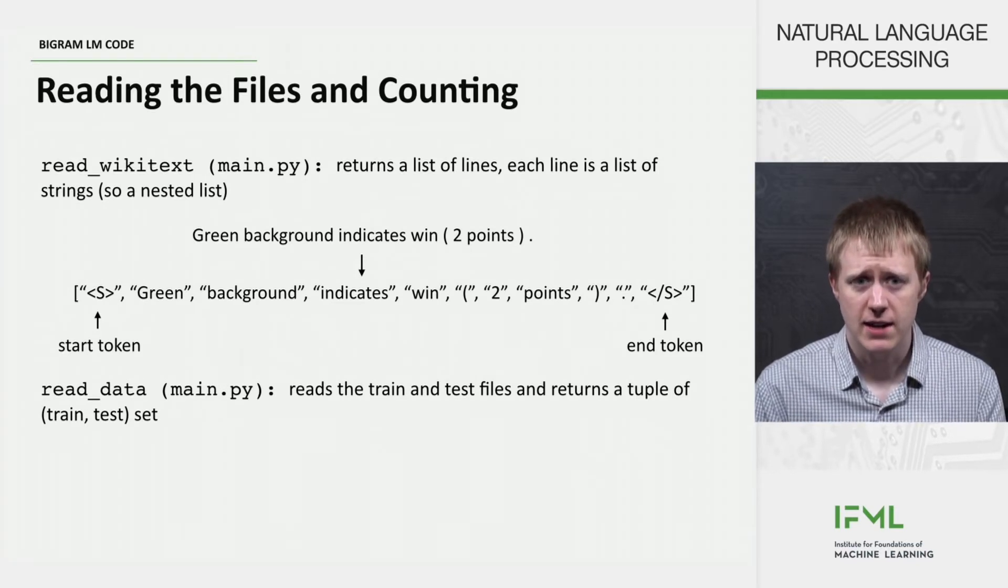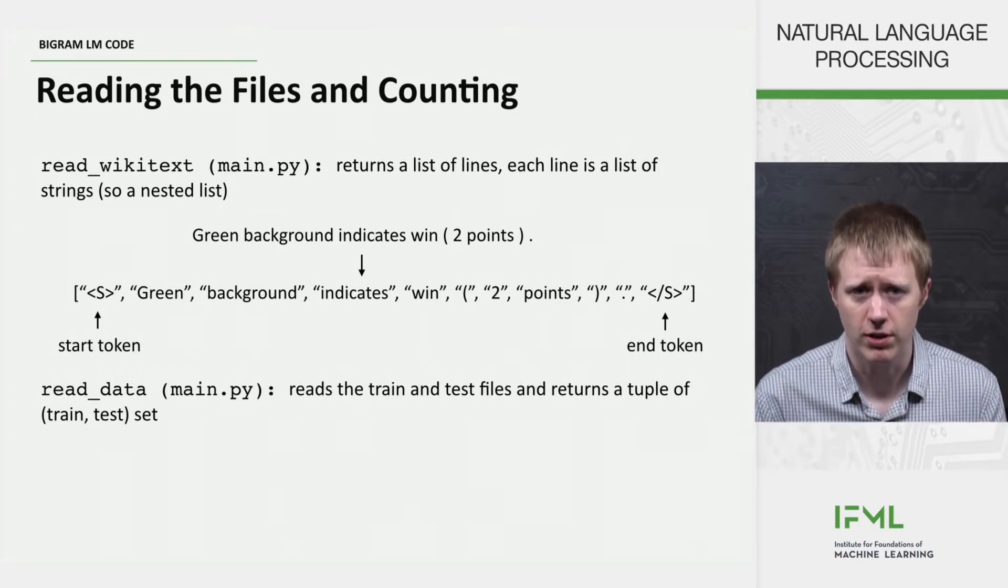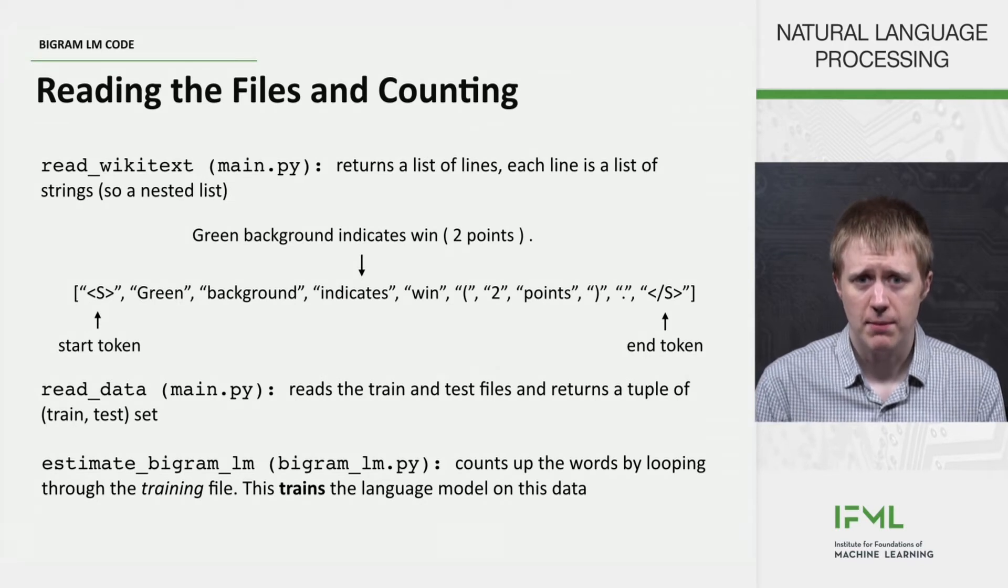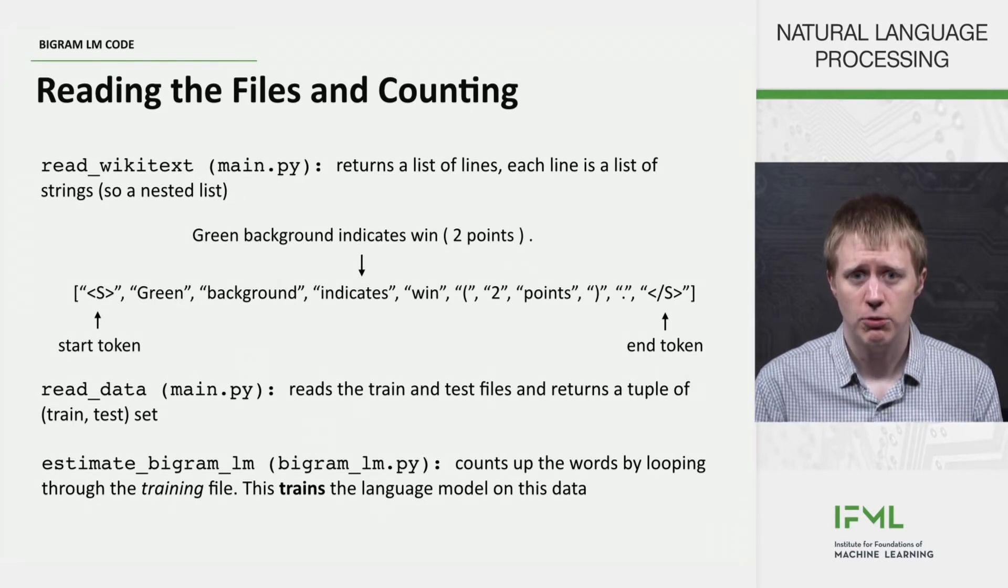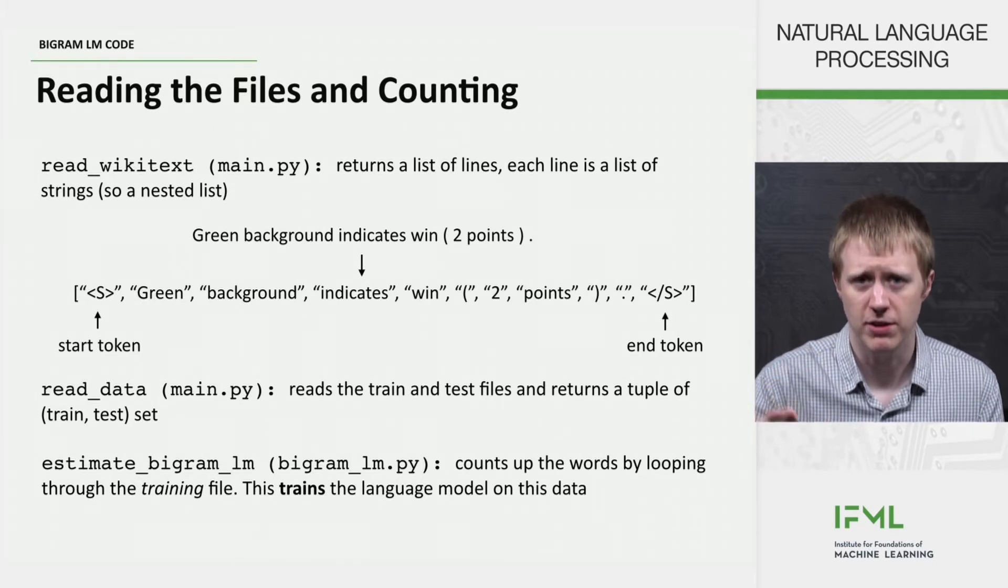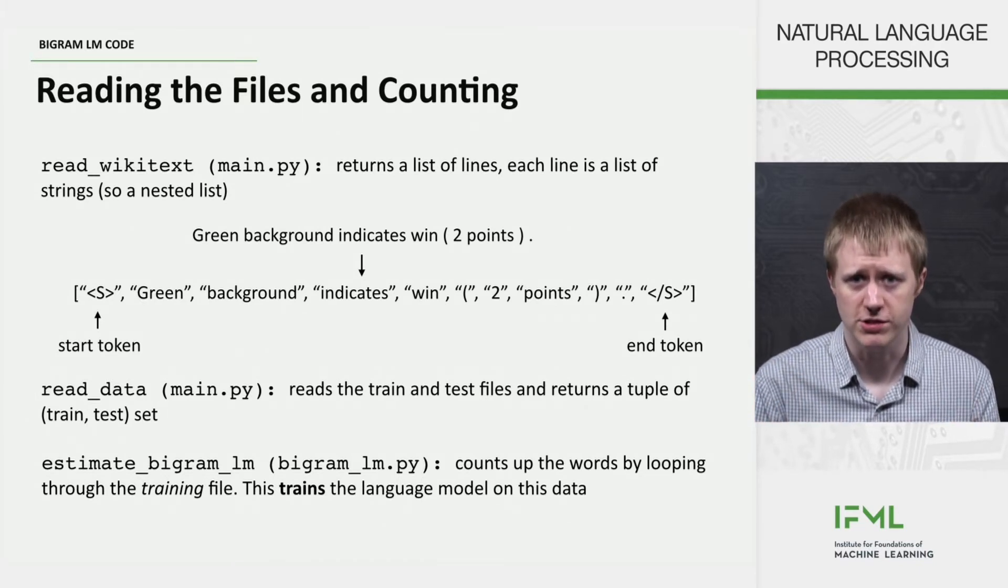And read_data in main.py will read both of the train and test files and return them as a tuple. And then finally estimate_bigramlm from bigramlm.py will do the actual looping through the training file and counting up everything that needs to be counted. And that's the training procedure.